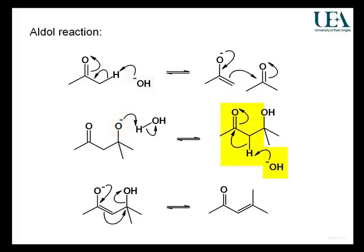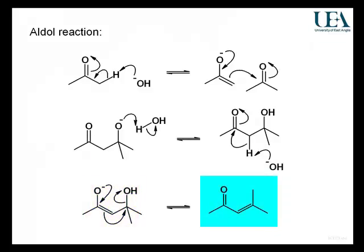We can deprotonate that ketone a second time to generate a new enolate, and that new enolate is different from the first one in a key respect. It's the enolate generated from the aldol product. That means it has the carbon-oxygen bond that came in through the functional group in the electrophile. That carbon-oxygen bond is a leaving group, and the leaving group is next to the reactive three-atom pi system of the enolate. So we can break that carbon-oxygen bond, and in that process extend the pi system, and the other product of the aldol chemistry is an alpha-beta unsaturated ketone.